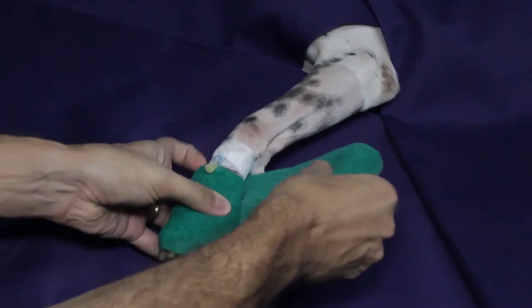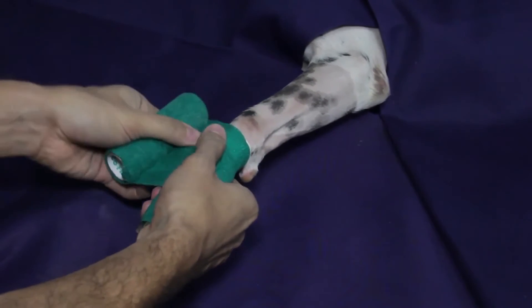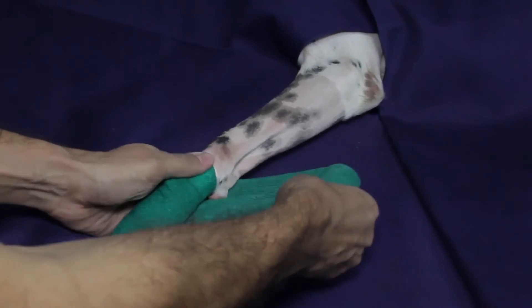Using an elastic bandage, the limb can be exsanguinated to improve the intensity of the blockade. The bandage is applied firmly in a distal to proximal direction.